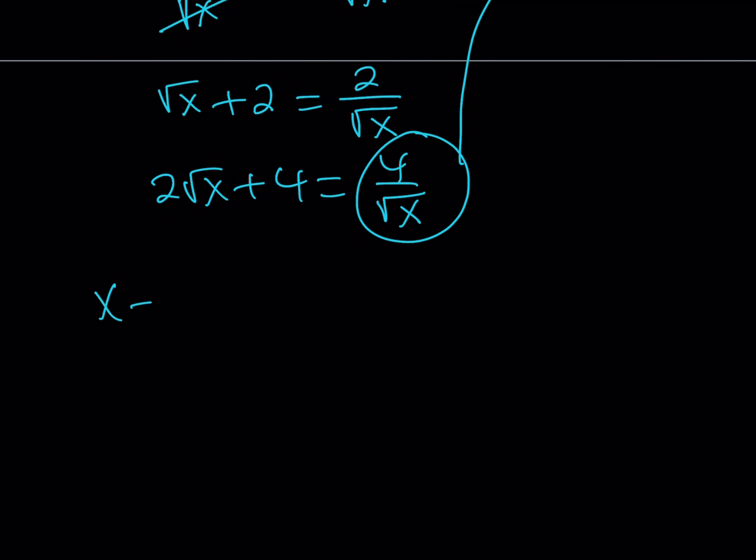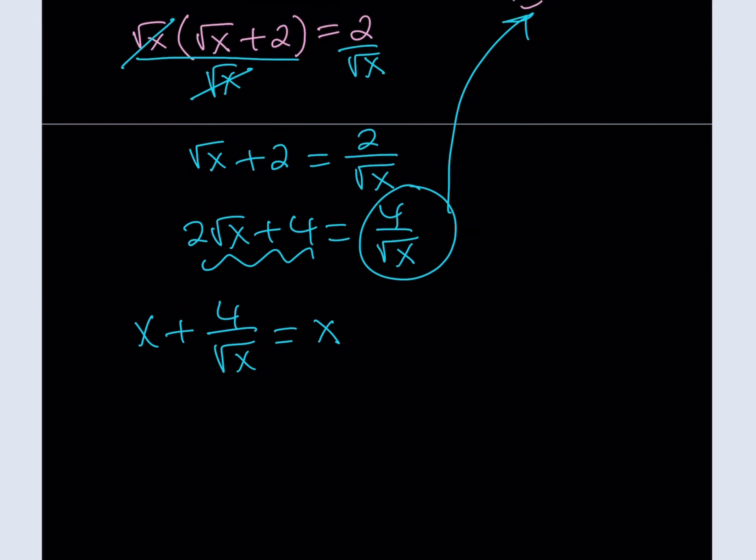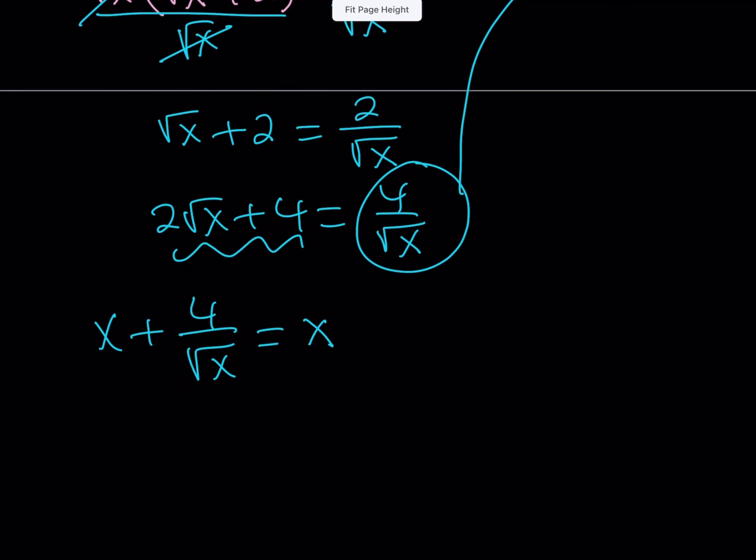So, my expression is x plus 4 over square root of x. Now, I can replace 4 over square root of x with this because that's what it's equivalent to. And that gives us something nice. You'll see in a little bit. So, I'm going to replace 4 over root x with 2 root x plus 4.